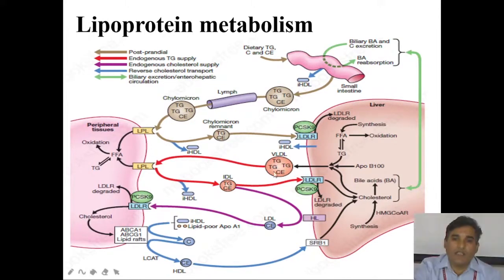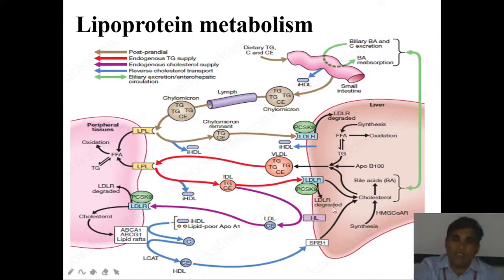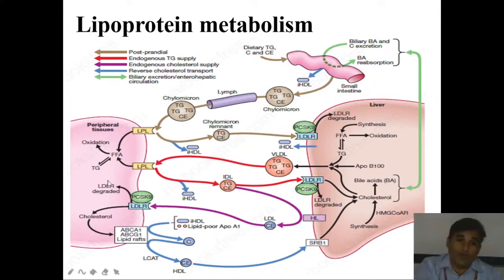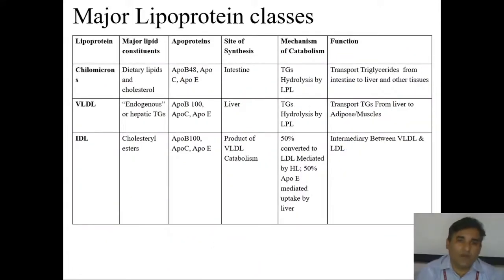VLDL is the type of lipid-cholesterol which is continuously secreted by the liver. When VLDL comes into the systemic circulation, it is further metabolized by lipoprotein lipase and gets converted into IDL. IDL is then transported into the liver by the LDL receptor, or it gets further converted into LDL, which acts on the peripheral tissue. HDL acts as a transport vehicle for cholesterol from peripheral tissue to the liver. This is the whole story of lipoprotein metabolism.